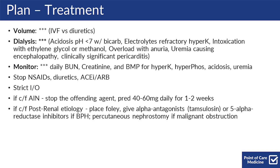If you're worried that there's a post-renal etiology, place a Foley and consider alpha antagonists like tamsulosin if you're worried about BPH. If it's a malignant obstruction, you can consider a percutaneous nephrostomy to relieve the obstruction.